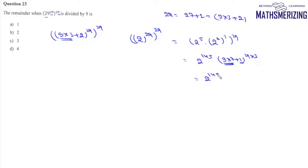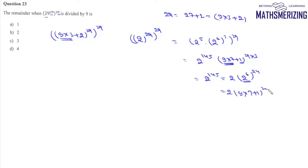So we are left with 2 to the power 145. We write 2 to the power 145 as 2 times 2 to the power 144, which is 2 times 2 to the power 6, to the power 24. Again, 2 to the power 6 is 9 times 7 plus 1, so to the power 24 the remainder is 1, leaving just 2. Therefore, the remainder when 29 to the power 29 to the power 29 is divided by 9 is simply 2 — option B.